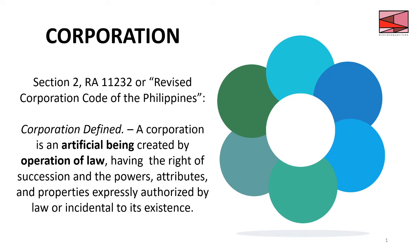A corporation, under Section 2 of RA 11232 (effective 2019 onwards), is an artificial being. Unlike us who are natural beings as humans, the corporation has a personality under the operation of law. When we register with the SEC, the corporation becomes recognized as an artificial being — that's the so-called birth of a corporation.